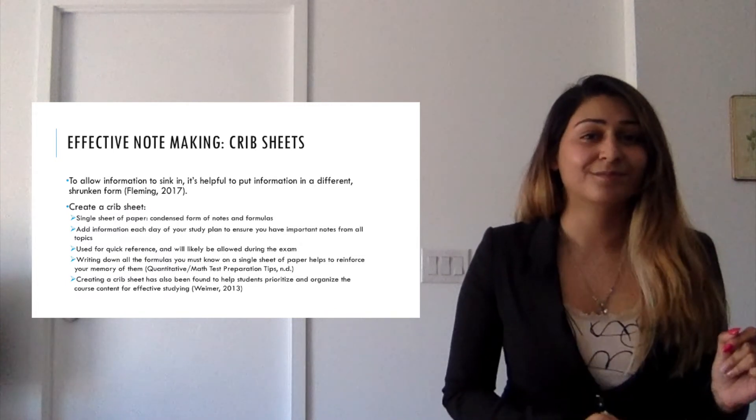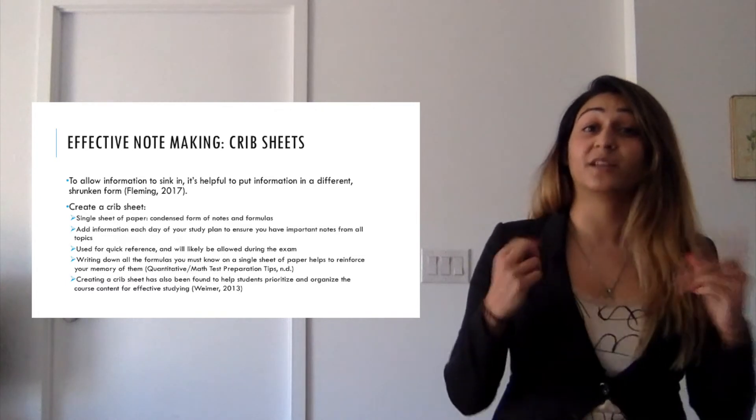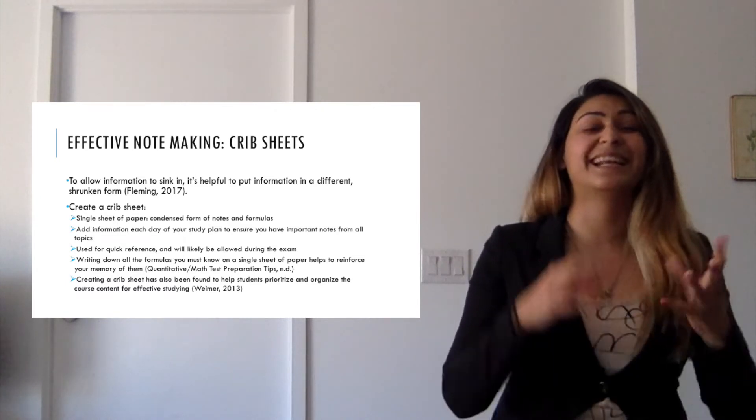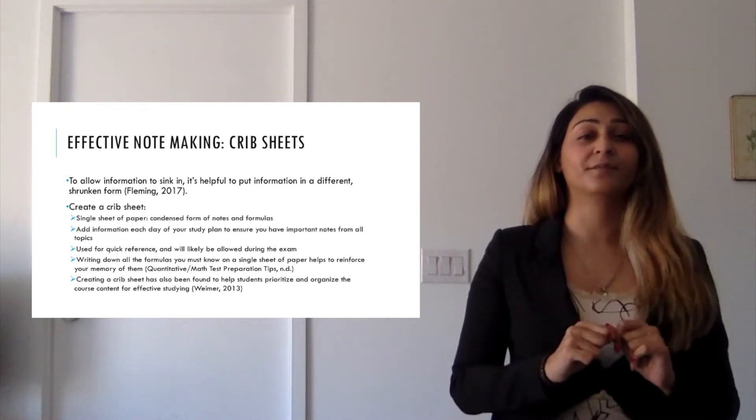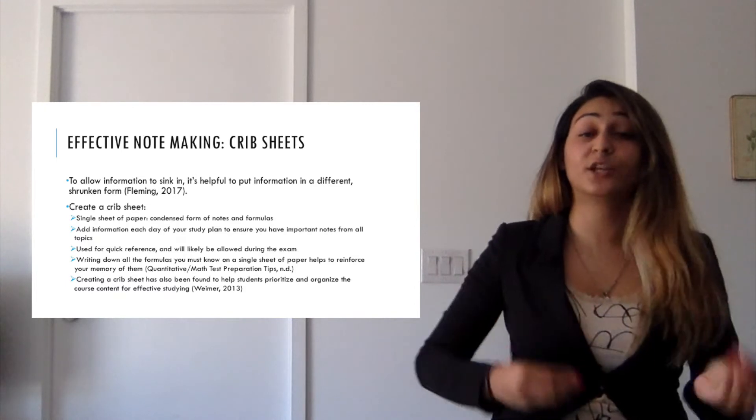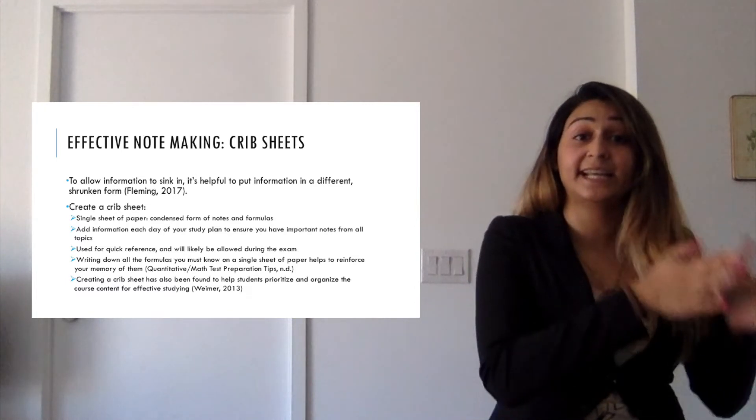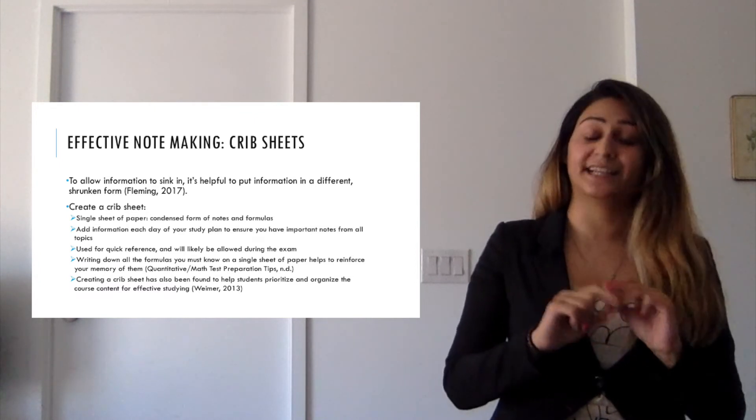Try making a crib sheet. But what is a crib sheet? It's a single sheet of paper with as much of your notes and formulas in a condensed form, especially things you feel that you have trouble with. You should add information to the crib sheet each day of your study plan so that you include information pertaining to each of the three calculus topics: limits, derivatives, and integration.